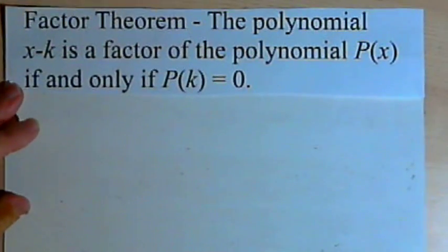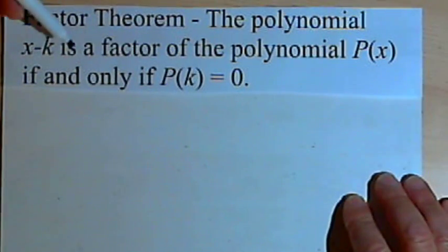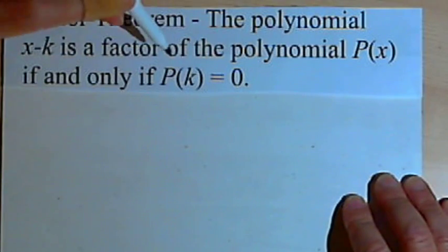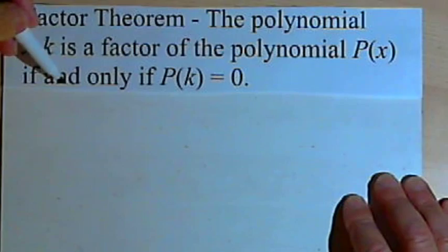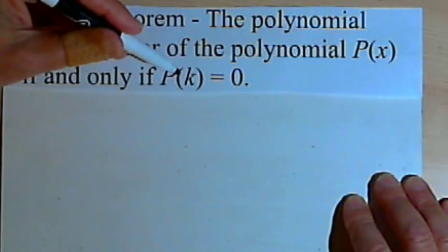So the factor theorem says that the polynomial x-k is a factor of the polynomial P(x) if and only if P(k) equals zero.